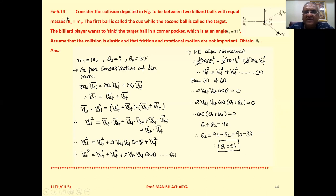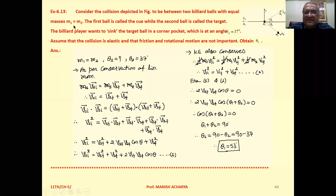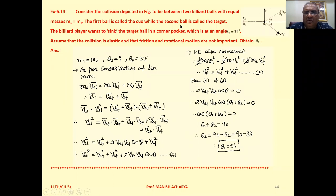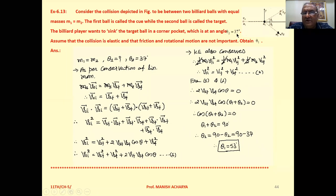Example 6.13: Consider the collision depicted in the figure to be between two billiard balls with equal masses, M1 equal to M2. The first ball is called the cue while the second ball is called the target. The billiard player wants to sink the target ball in a corner pocket which is at an angle theta 2 equal to 37 degrees.